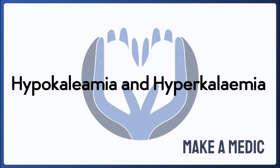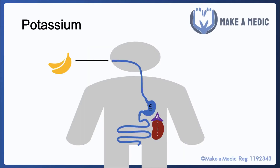Welcome to this Make a Medic tutorial. Today's topic is hypokalemia and hyperkalemia. To understand these irregularities, it's worth thinking about normal potassium homeostasis within the body. We get a supply of potassium from the diet, mainly from various fruits and vegetables, and the level of potassium is mediated by how much is absorbed in the GI tract and how much is excreted in the kidneys. The adrenal glands are very important in producing various hormones that can affect potassium levels.